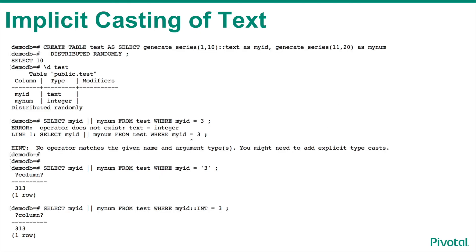In this example, a table is created with numeric values, but in the table definition, the MyID column is created as type text. The first select statement fails because the text column and the integer value of 3 are no longer automatically compared, as they were in the 4.3 version of Greenplum. Instead, an error is returned to the user or application that attempted to execute the SQL statement. To correct this issue, instead of relying on implicit type conversion, the value of 3 would be quoted as its character representation. Alternatively, the MyID column could be cast to an integer for the equality expression to work without returning an error.